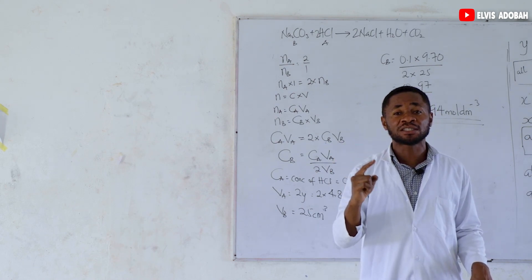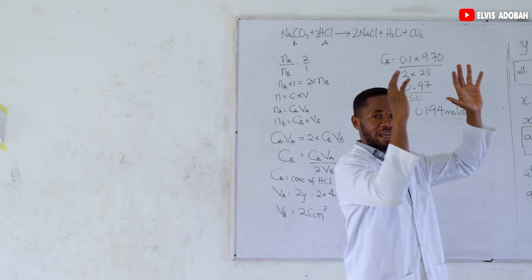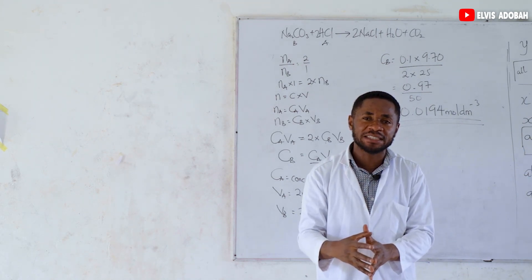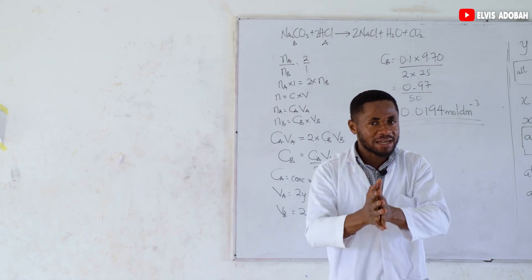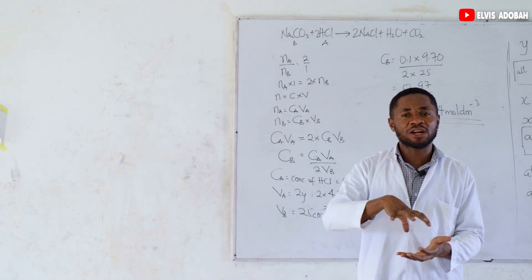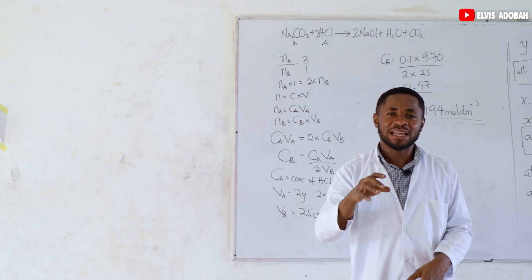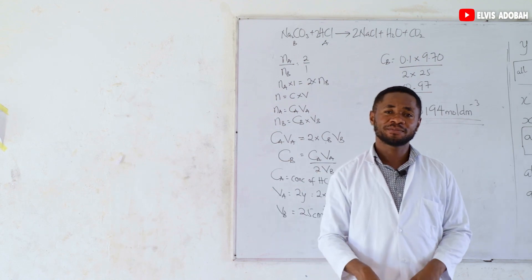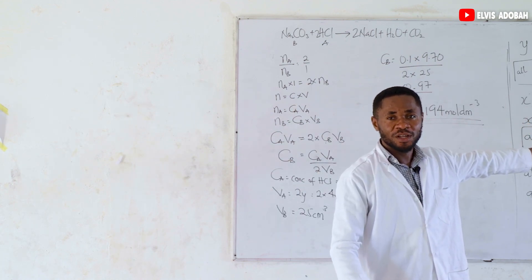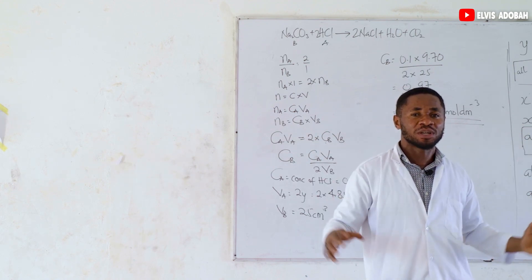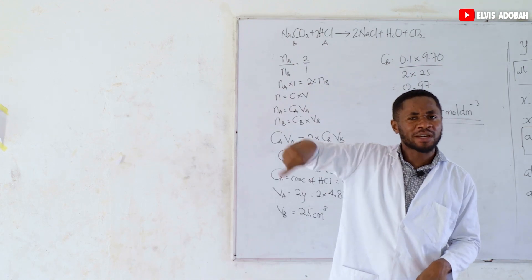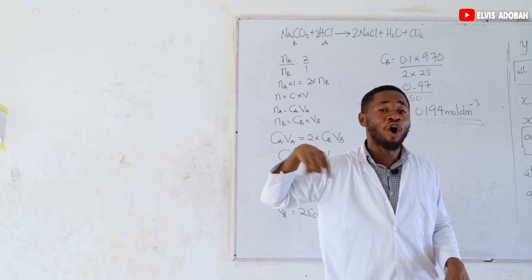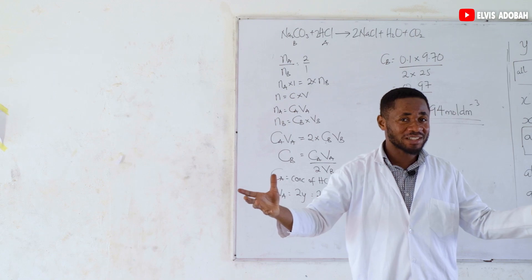The key point is: the volume of acid needed to react completely with all sodium carbonate is 2Y — same as in continuous titration — where Y is the average titer in the phenolphthalein titration. The volume of acid needed to react with all sodium bicarbonate is X minus 2Y. In continuous titration it was X minus Y, but in discontinuous it is X minus 2Y, because in discontinuous you perform a whole separate titration using methyl orange.